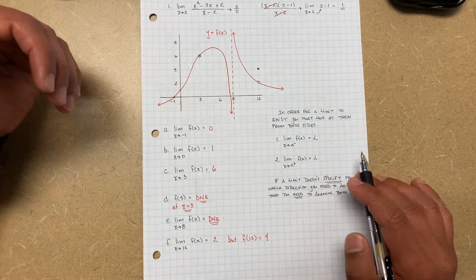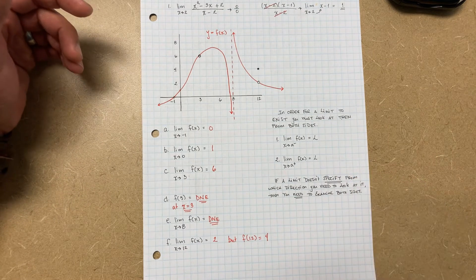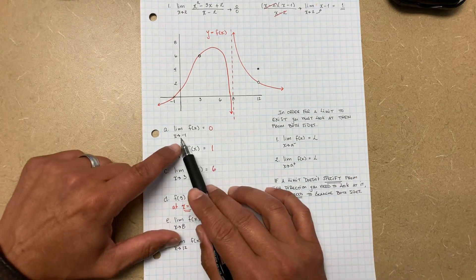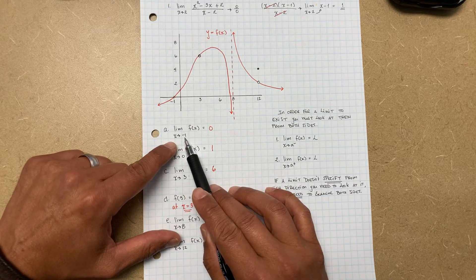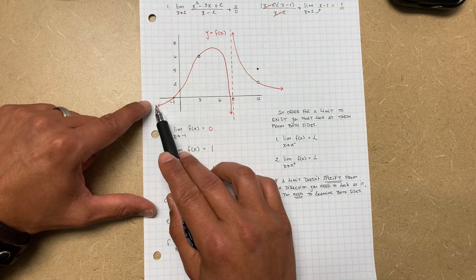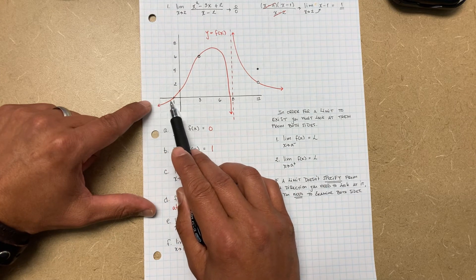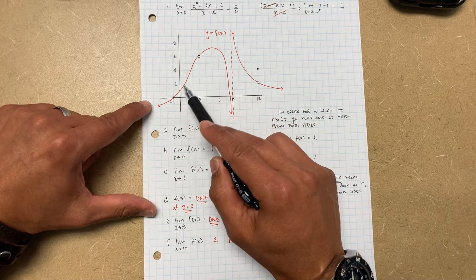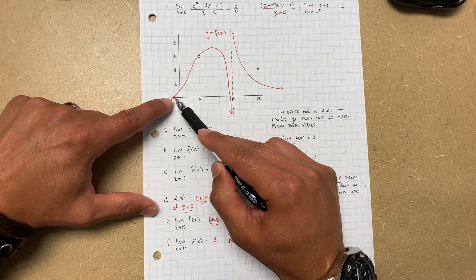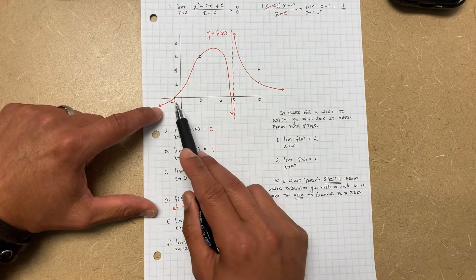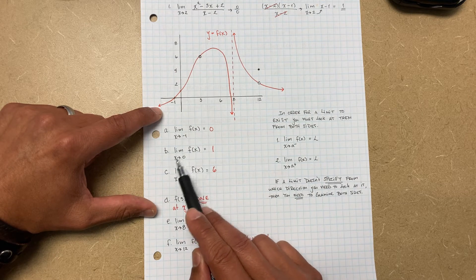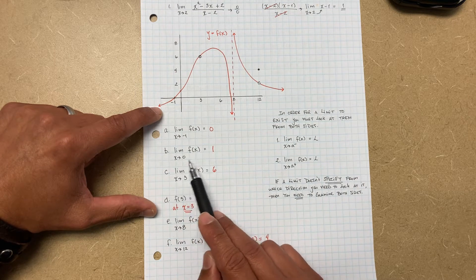It's very important you understand: a limit only approaches, it never gets there. So look at this one — the limit as X approaches negative 1. Here's negative 1, so we look at it from the left side and from the right side. What is it approaching? It approaches a Y value — what's this Y value? Zero.